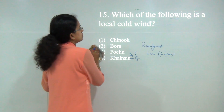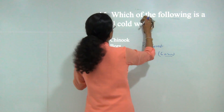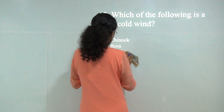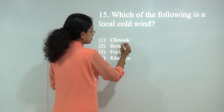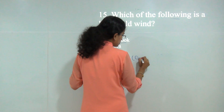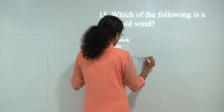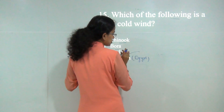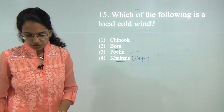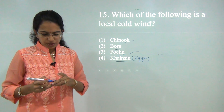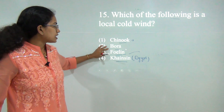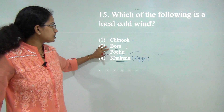Next question: which of the following is a local cold wind? The winds given are Chinook, Bora, Foehn, and Khamsin. Khamsin is a hot wind from Egypt. Foehn usually blows on the leeward side. Chinook is found in North America. Bora is found in Northeast Europe. So these are the various kinds of local winds that blow in those regions.